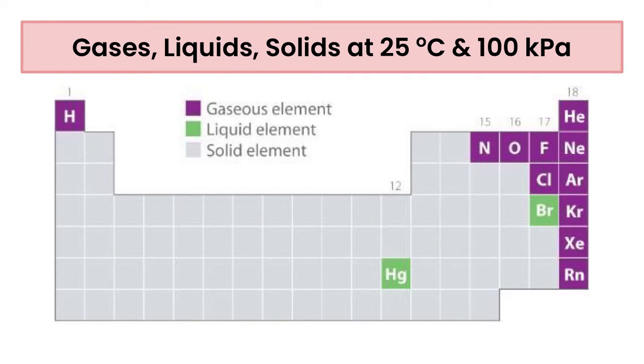So starting with where to find the gases on the periodic table. Now note this is at 25 degrees Celsius and 100 kPa. So these are conditions of standard temperature and pressure, standard ambient temperature and pressure. Your gases are mostly located on the right hand side of the periodic table.